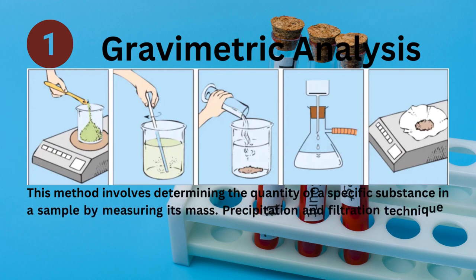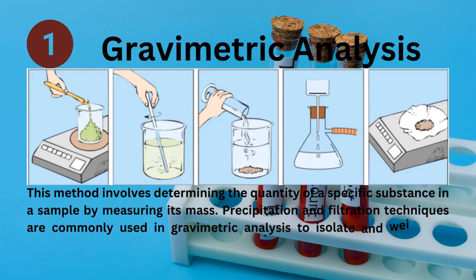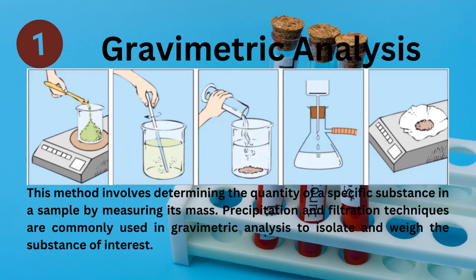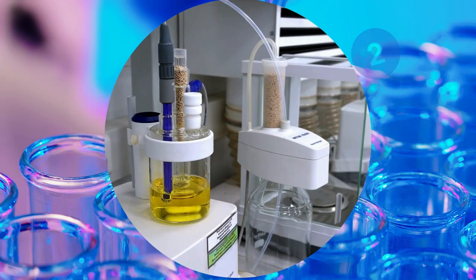Gravimetric analysis: This method involves determining the quantity of a specific substance in a sample by measuring its mass. Precipitation and filtration techniques are commonly used in gravimetric analysis to isolate and weigh the substance of interest.